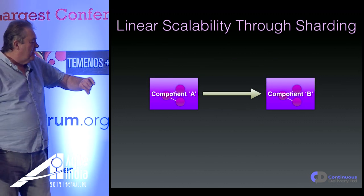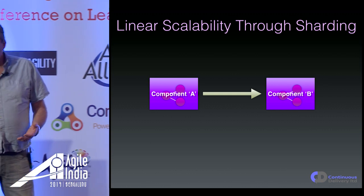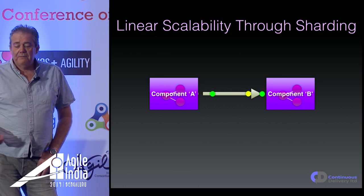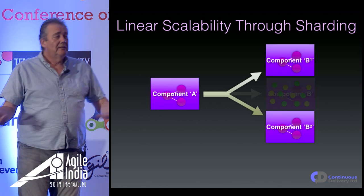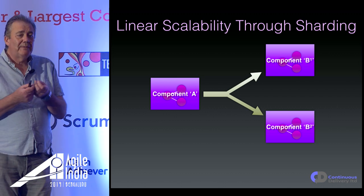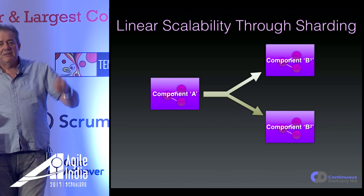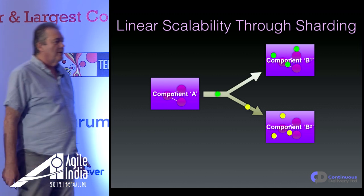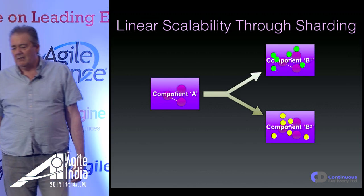How do we scale these kinds of things? We can think about scaling through sharding. We've got component A talking to component B with a stream of messages coming in. If that's not fast enough, we can build slightly smarter infrastructure able to determine differences between invocations and route some traffic to one instance of component B and other traffic to another instance. This is another dimension of scalability for these kinds of systems.